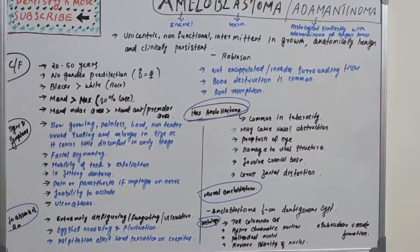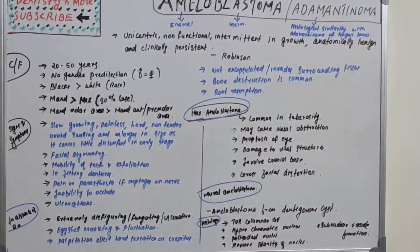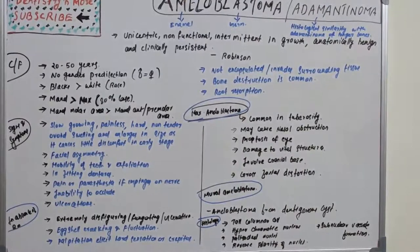Facial asymmetry will be a problem; there will be mobility of teeth and exfoliation; dentures will be ill-fitting due to the enlarged maxilla or mandible. Pain or paresthesia may occur if a nerve is impinged — such as the inferior alveolar nerve or facial nerve. There will also be inability to occlude and ulcerations.